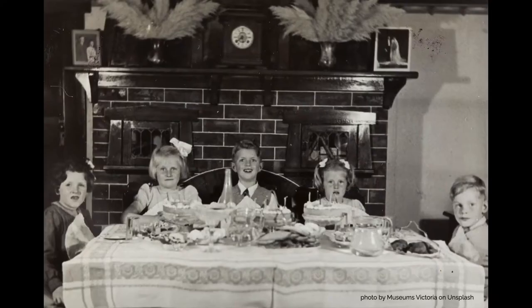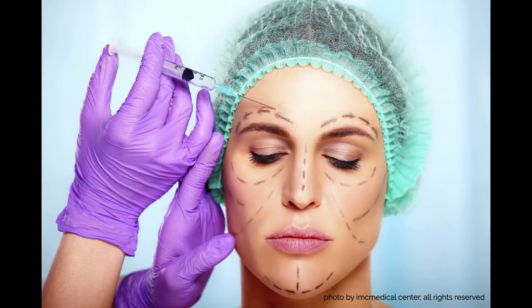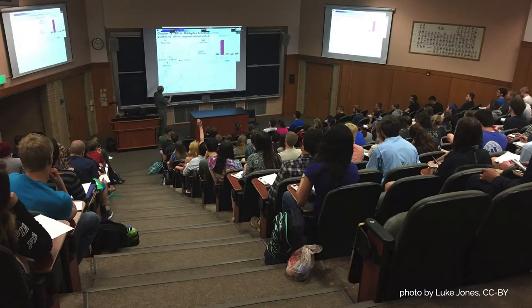Visible culture also includes how we eat our food, the accepted ways we alter our own bodies, the design and organization of our homes, and even the way college campuses, classrooms, and courses are configured.